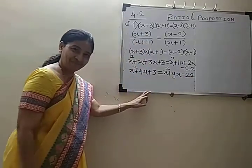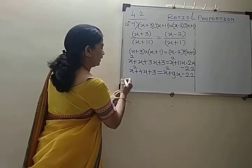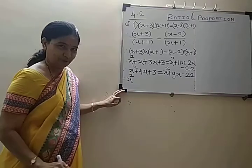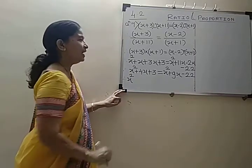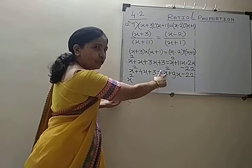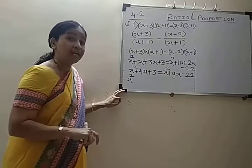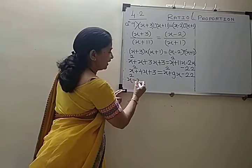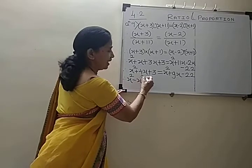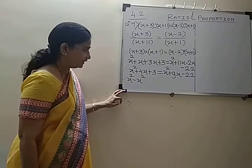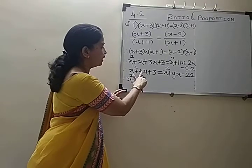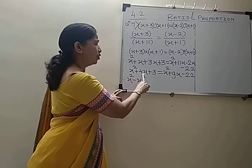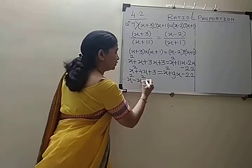Minus 22. Now I will keep this x squared on this side and bring the other x squared to this side — left side. So plus x squared minus x squared. Then just keep plus 3.